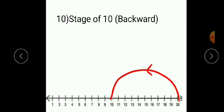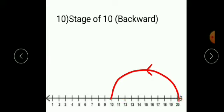The last is stage 10 backward. As it is stage of 10, move 10 numbers back. As it is a backward stage, start from the last number. The number line goes from 1 to 20, so start from 20 and move 10 numbers back: 1, 2, 3, 4, 5, 6, 7, 8, 9, and 10. You will reach number 10. Draw a curve and give the backward arrow to represent the backward stage.